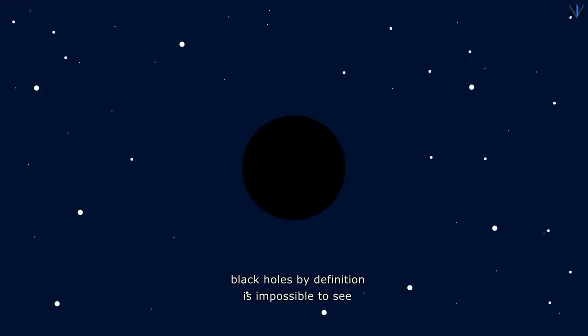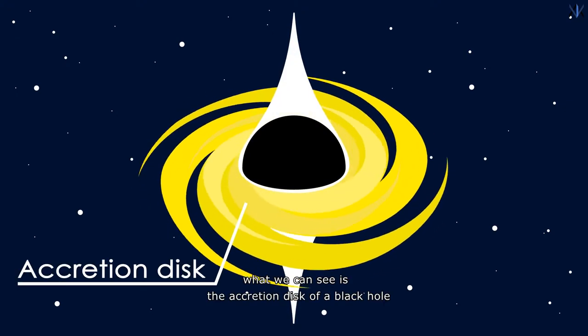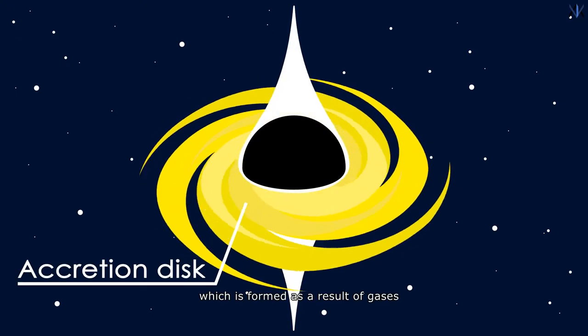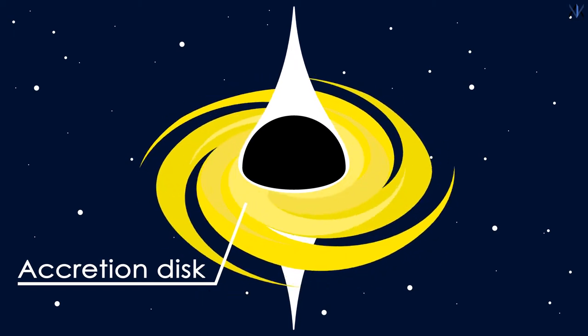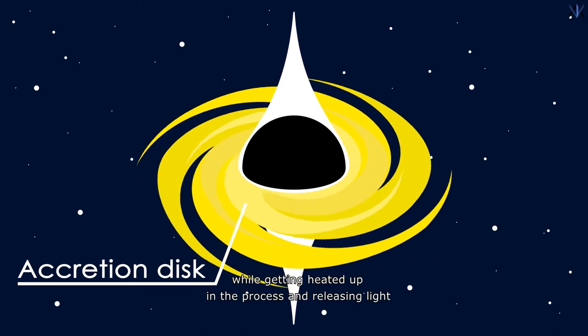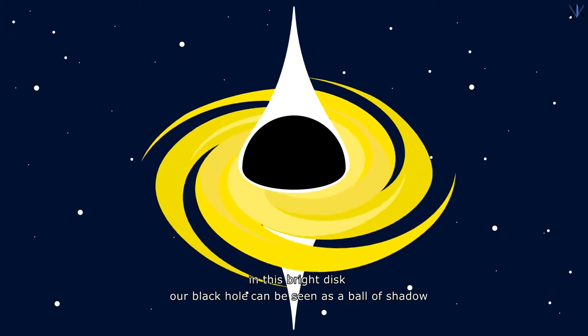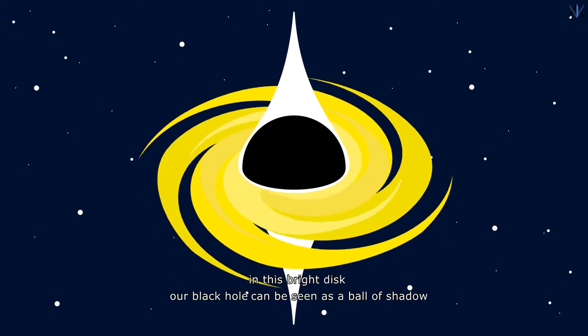Black holes by definition are impossible to see. This is because in order to see something, we need light to reflect back from it. But a black hole has a gravitational pull so high that even light can't escape it, making it impossible to see what is inside a black hole. What we can see is the accretion disk of a black hole, which is formed as a result of gases and dust particles rotating rapidly around it, while getting heated up in the process and releasing light. In this bright disk, our black hole can be seen as a ball of shadow.